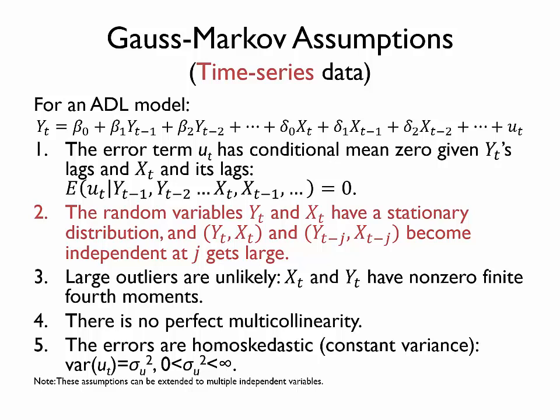The new assumption is that the random variables yt and xt have a stationary distribution, and that the variables y and x at time t and those same variables j periods earlier become independent as the lag length j gets large. We'll take some time to wrap our heads around exactly what this assumption means.